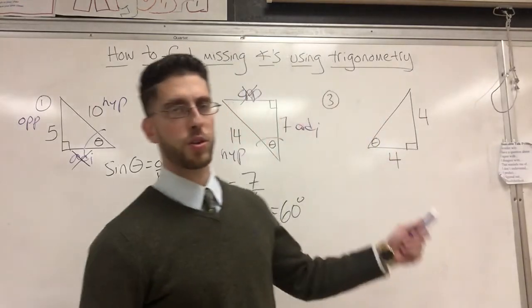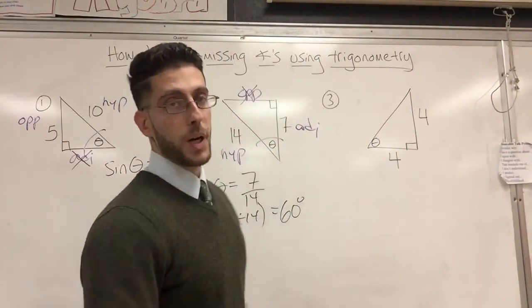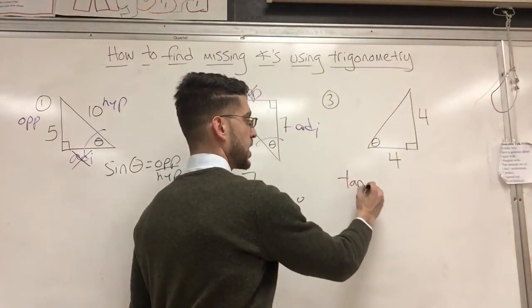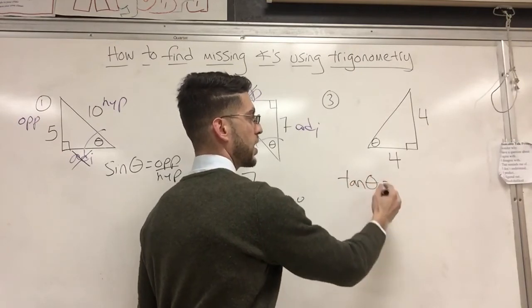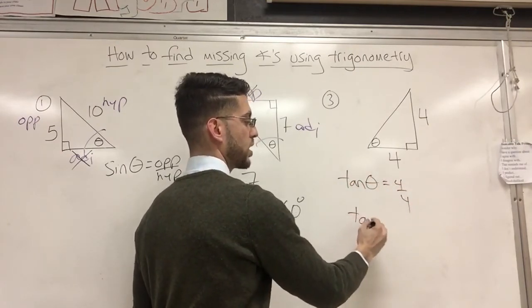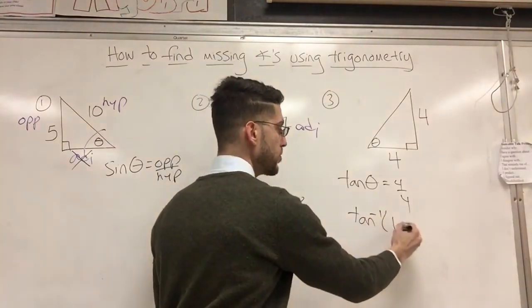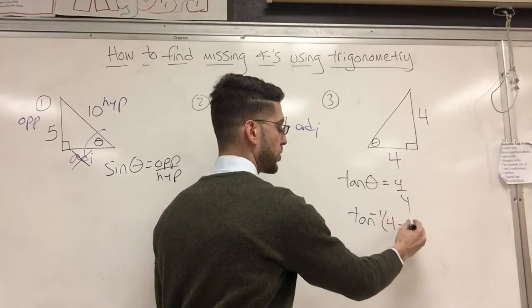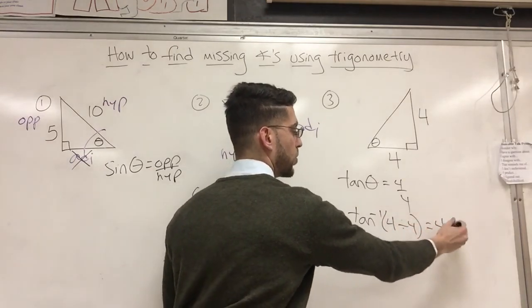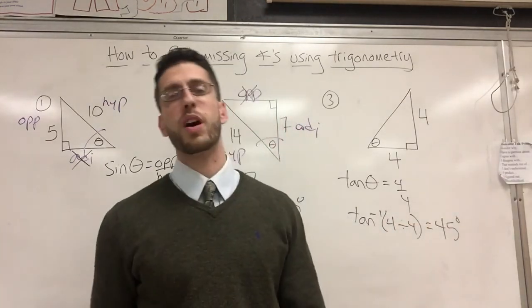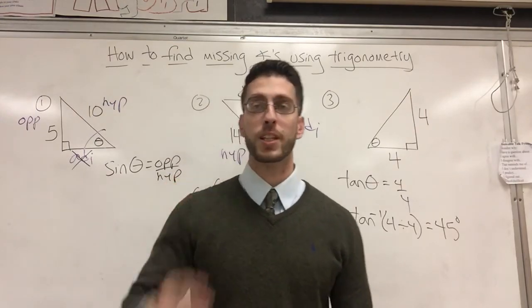Finally, you should probably try this one on your own. But I'll give you a hint. This time, it's going to come out to be tangent theta equals 4 over 4. So we're going to need the tangent inverse, right? Of 4 divided by 4. Hopefully, hopefully, you get 45 degrees. Please confirm. Thanks for watching. See ya.